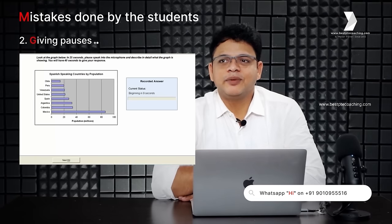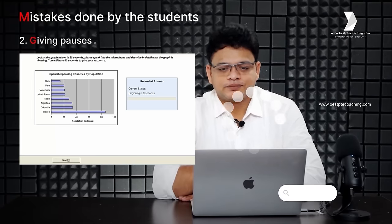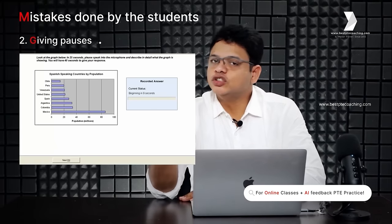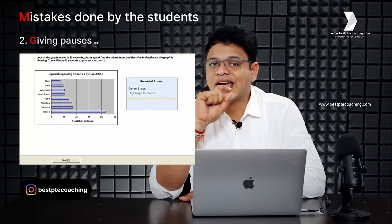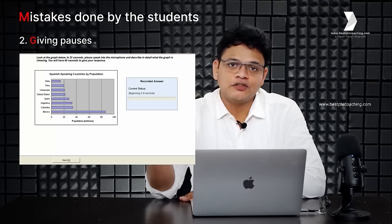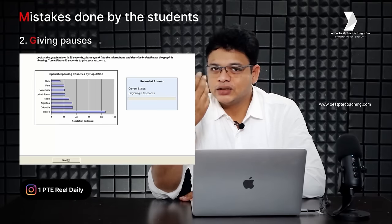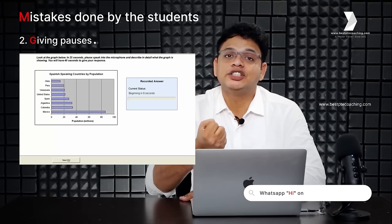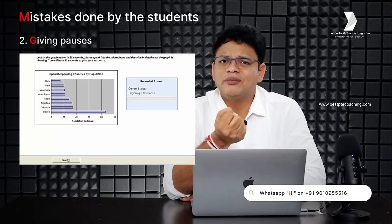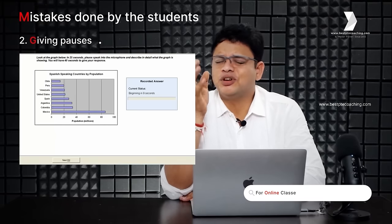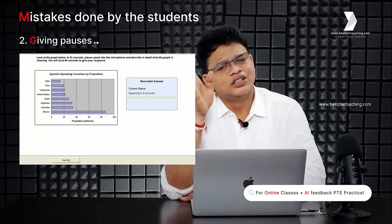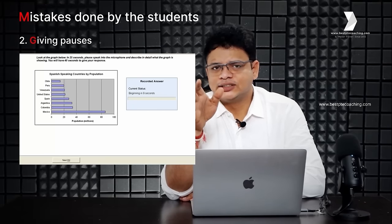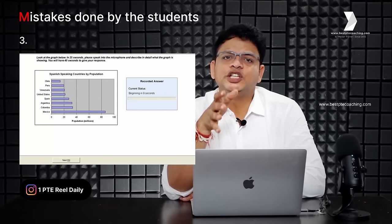The second mistake is giving fillers and pauses — for example, saying 'the image explains information about...' then waiting before giving the title. There should be no gaps when speaking; it should go in the flow. Some students stop while speaking the template because they need to capture information from the image. This is again fundamentally a problem from preparation time not being utilized well.